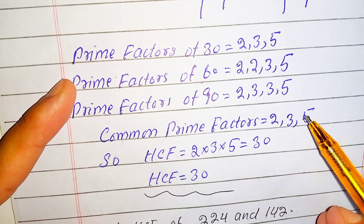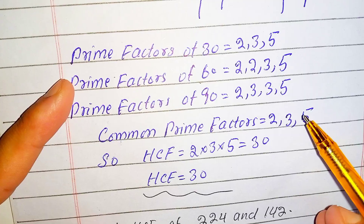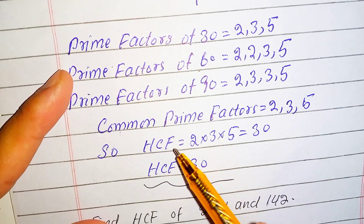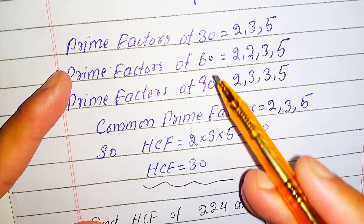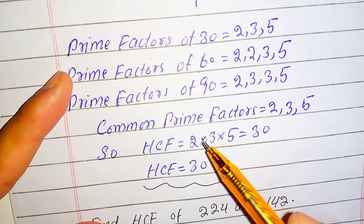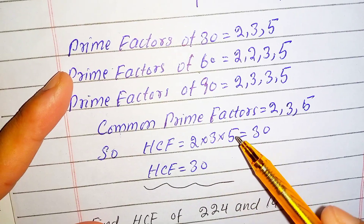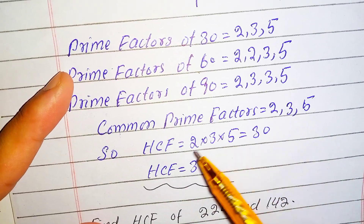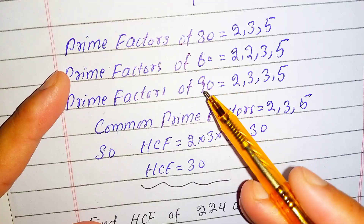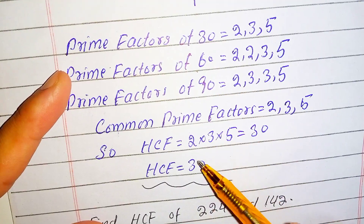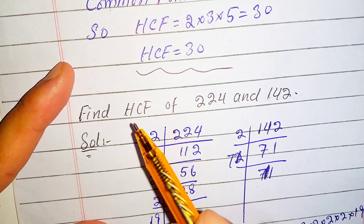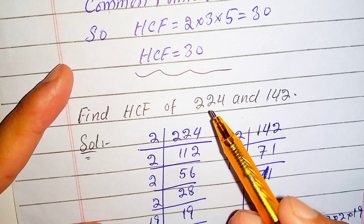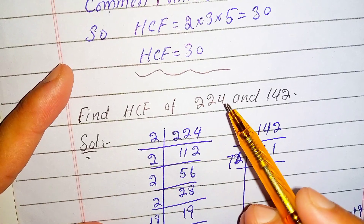We multiply the common prime factors to get the HCF. So HCF of 30, 60, and 90 is equal to 2 times 3 times 5, which equals 30. So the HCF of 30, 60, and 90 is 30.